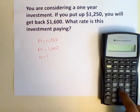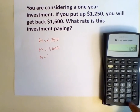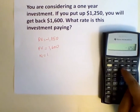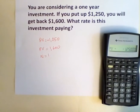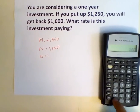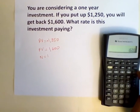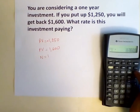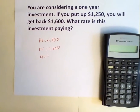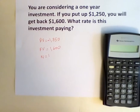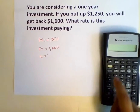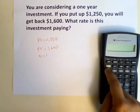So $1,250, negative, would be our PV. $1,600 is our FV, so you hit the FV button. 1 is how long we are investing, so we input it as N.